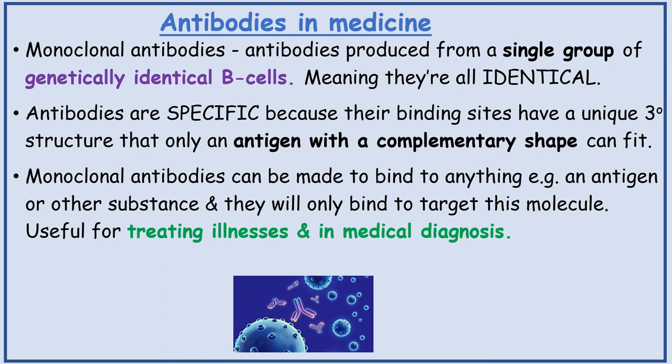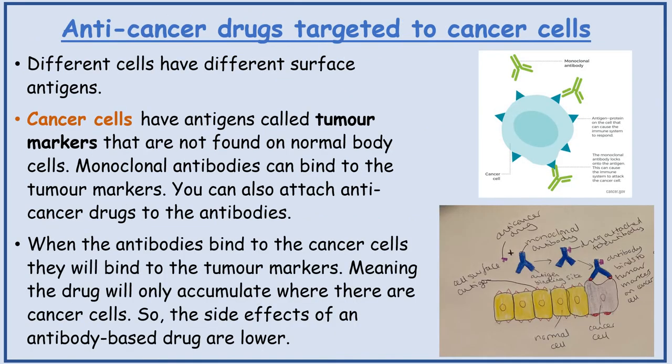This is useful for treating illnesses and in medical diagnosis. Anti-cancer drugs can be targeted to cancer cells. Different cells have different surface antigens. Cancer cells have antigens called tumour markers that are not found on normal body cells. Monoclonal antibodies can bind to these tumour markers.